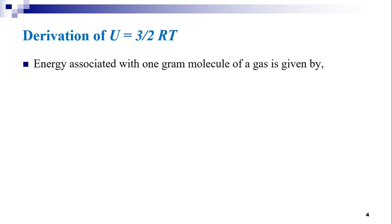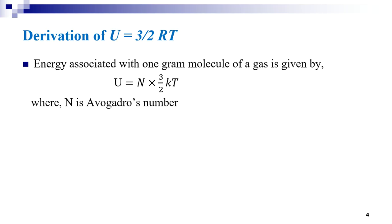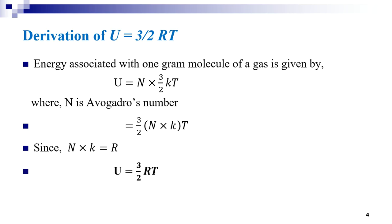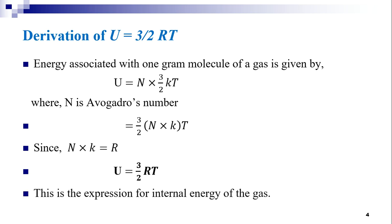Consider 1 gram molecule of a gas. The energy associated with 1 gram molecule of a gas is given by U is equal to N into 3 by 2 KT, where N is the Avogadro number. That is equal to 3 by 2 into N into K into T. Since N into K equals R, where R is the gas constant, the expression becomes U is equal to 3 by 2 RT. This is the expression for internal energy of the gas. For an ideal gas, it depends upon temperature only.